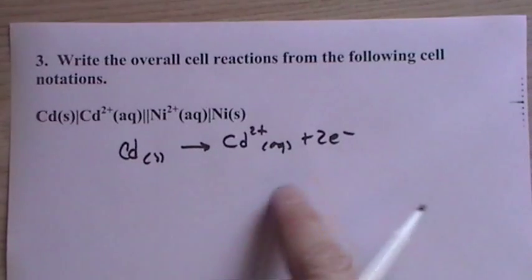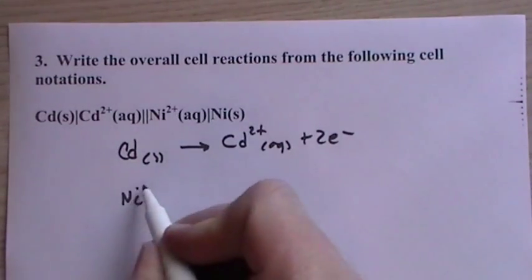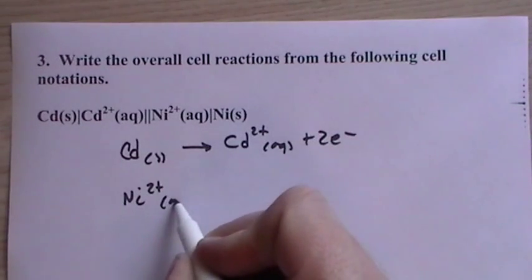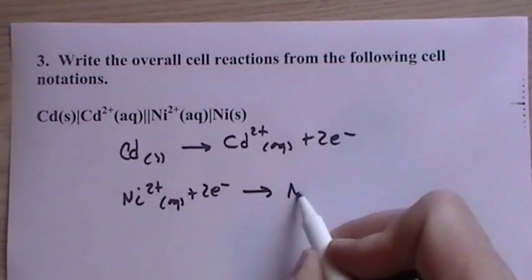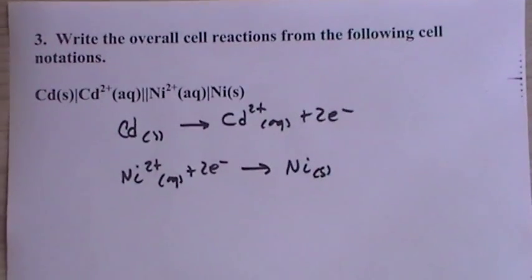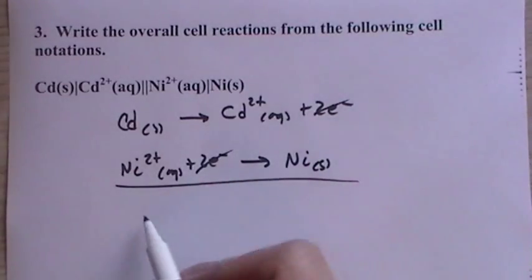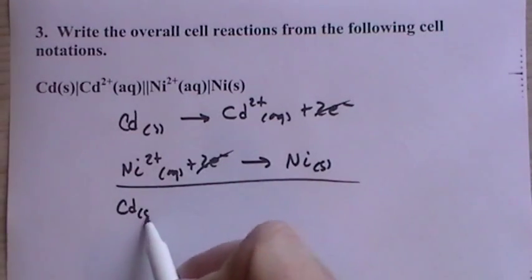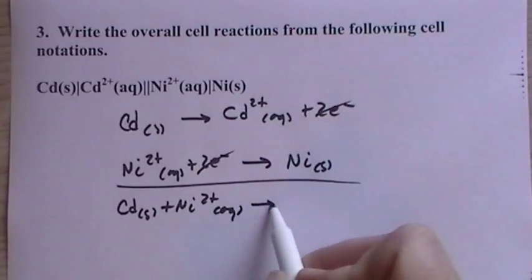But since it's part of this reaction, we know that it does go forward. So we might as well just put that right facing arrow. Then we have the nickel is reduced. So the electrons are on the left side. Then we have nickel solid. The electrons balance out. So they're going to cancel. They have the same coefficient. So that's good. And so the overall is this.